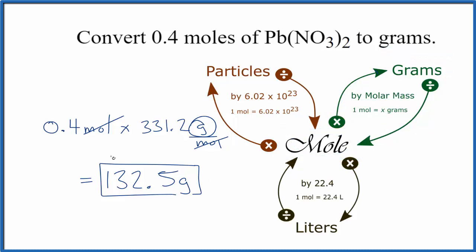If we were given grams and asked to find moles, we'd start with grams. Then we divide by the molar mass and that would give us moles of lead nitrate. This is Dr. B converting from moles of lead nitrate to grams. Thanks for watching.